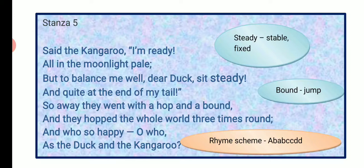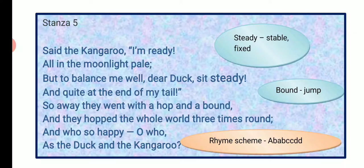Both enjoyed each other's company. 'Steady' means stable, and 'bound' means to jump. The rhyme scheme is ABABCCDD. Literary devices include alliteration: 'but to balance' (B), 'dear duck' (D), 'sit steady' (S), 'whole world' (W), 'went with' (W). There is anaphora with repeated 'and' starting lines. There is also enjambment in 'but to balance me well, dear duck, sit steady and quiet at the end of my tail' — one sentence written across two lines.